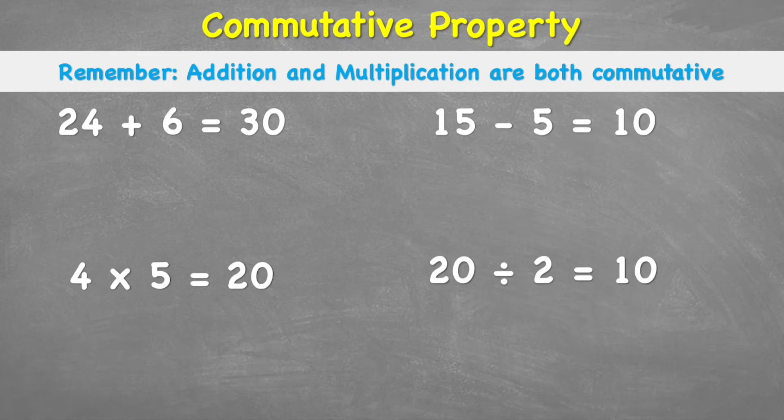Okay, so first of all, this is a horrible word, isn't it? Commutative. What does it mean? Well, to commute means to move. So commutative property means that things can move around. Let's have a look at what that looks like.